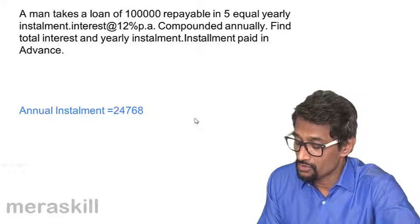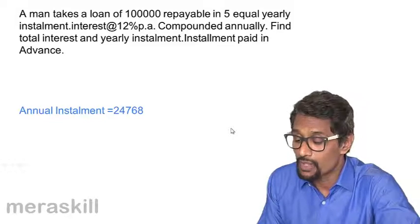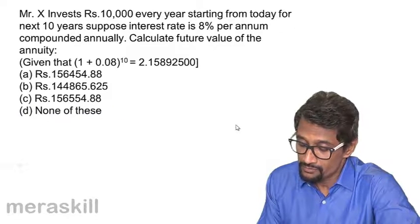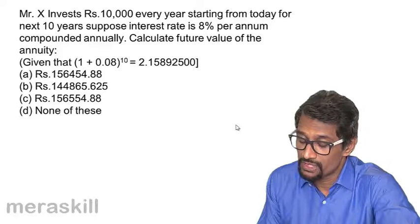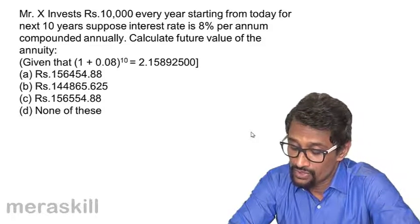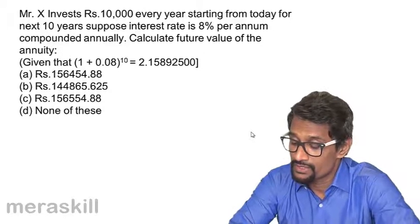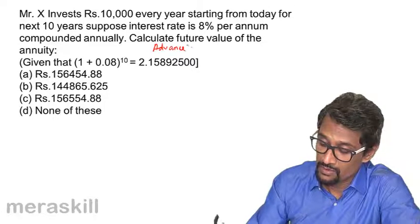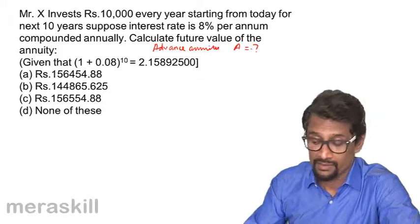The annual installment turns out to be 24,769. You can always calculate interest by multiplying by 5 and then subtracting 1 lakh. Now, Mr. X invests rupees 10,000 every year starting from today for the next 10 years. Interest rate is 8% per annum compounded annually — so it's an advanced annuity — and we need to find the future value.